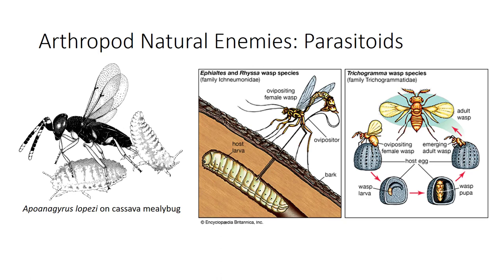Many of the ecto- and endoparasitoids in Aphelinidae and Syrphidae parasitize mealybugs, scale insects, aphids, and whiteflies. Braconids and ichneumonids have a narrow host specificity.